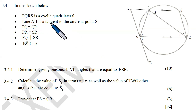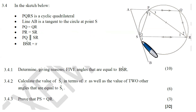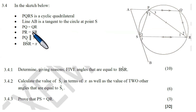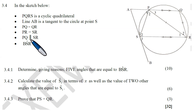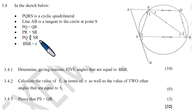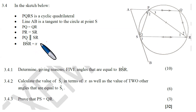Line AB is a tangent to the circle at point S. PQ equals QR. PR is equal to SR, and PQ is parallel to SR — so we have a parallel side. The angle BSR is x — this angle BSR here is x.